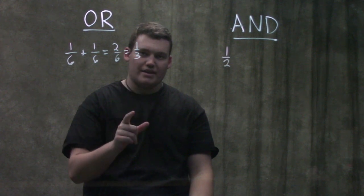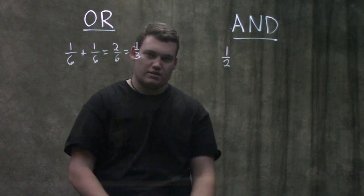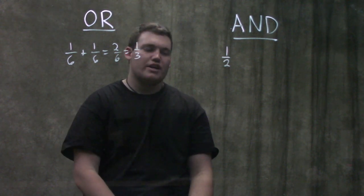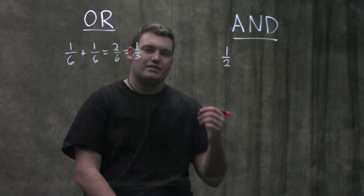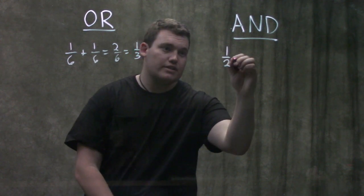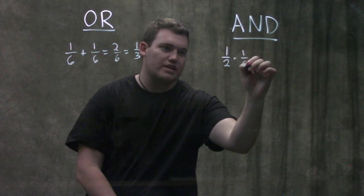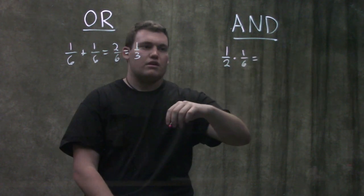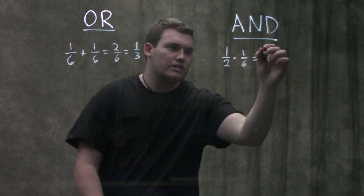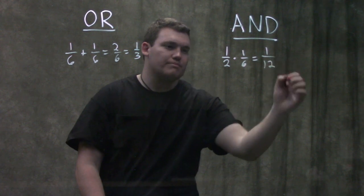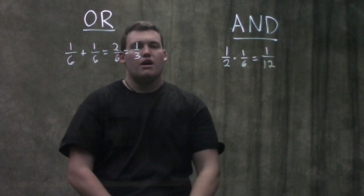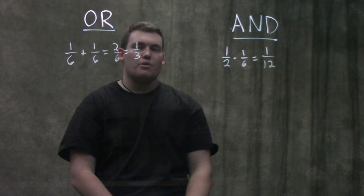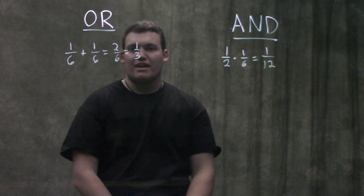The chance of getting heads is 1/2. Because I said AND — not OR — the chance of getting heads AND a 6 is 1/2 times 1/6, which gives me 1/12. So there's only a 1/12 chance that both of those things happen. The AND and OR rules themselves are not that hard.